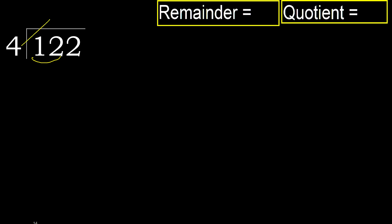4 — multiply by which number is nearest to 12 but not greater? 4 multiply by 4 is 16; 16 is greater. 4 multiply by 3 is 12 — is not greater.